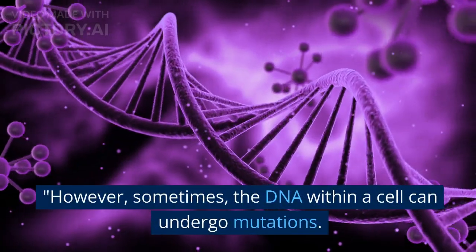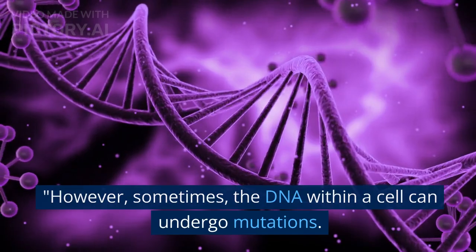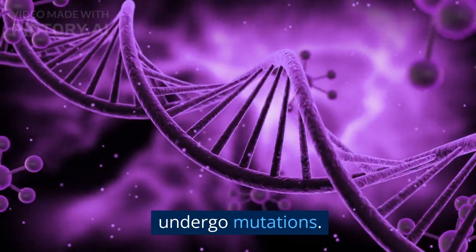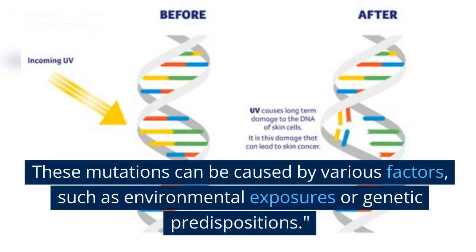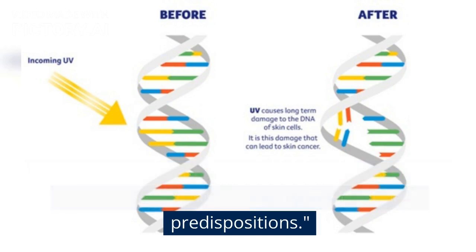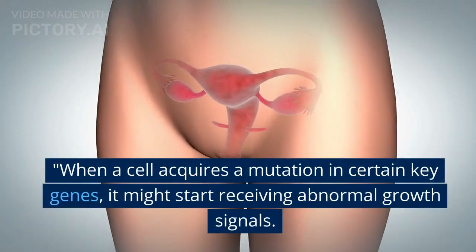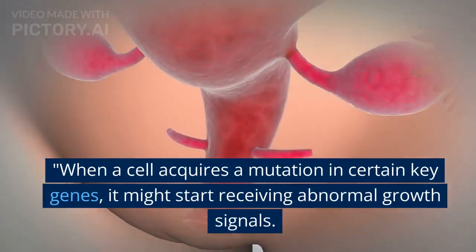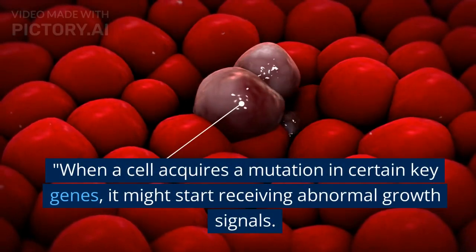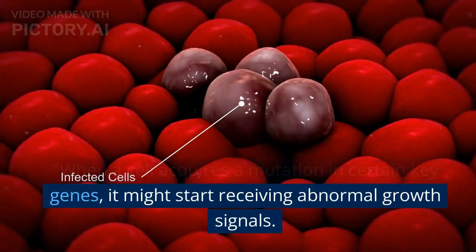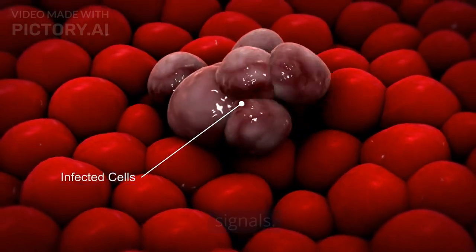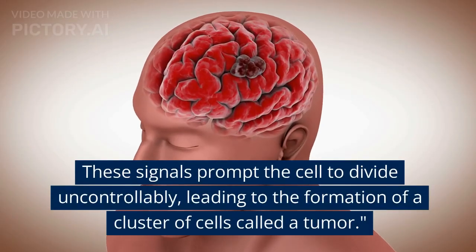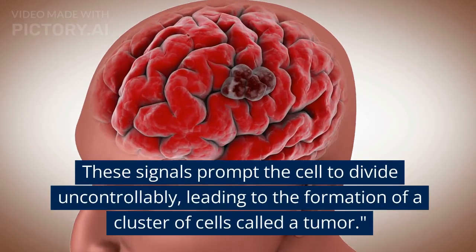However, sometimes the DNA within a cell can undergo mutations. These mutations can be caused by various factors, such as environmental exposures or genetic predispositions. When a cell acquires a mutation in certain key genes, it might start receiving abnormal growth signals.